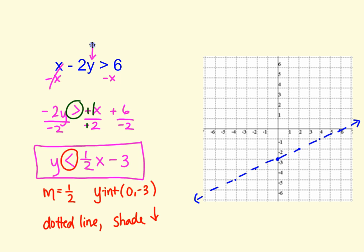And then we said dotted line. And shading below. So go to your y-intercept. Right there, shade below.